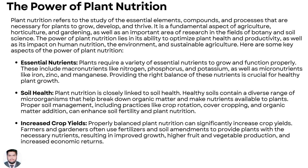The power of plant nutrition lies in its ability to optimize plant health and productivity as well as its impact on human nutrition. Plants require a variety of essential nutrients to grow and function properly. These include macronutrients like nitrogen, phosphorus and potassium, as well as micronutrients like iron, zinc and manganese. Providing the right balance of these nutrients is critical for healthy plant growth.